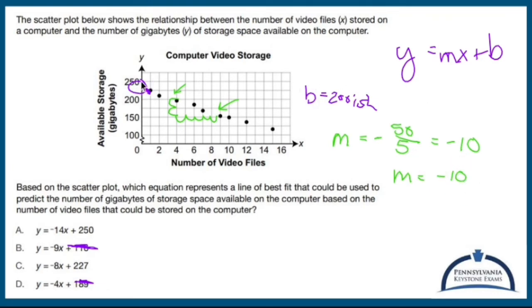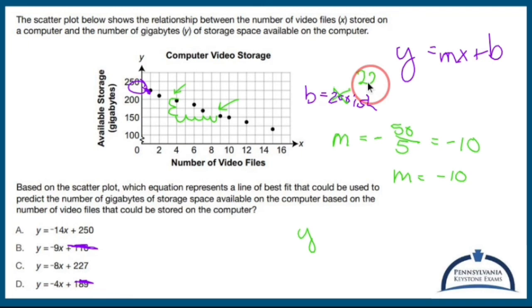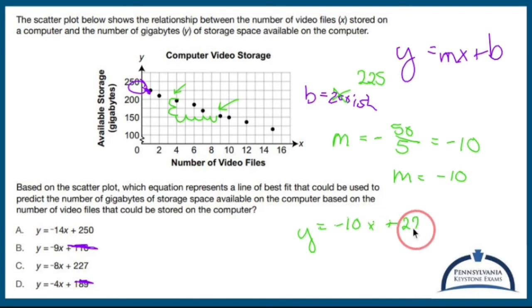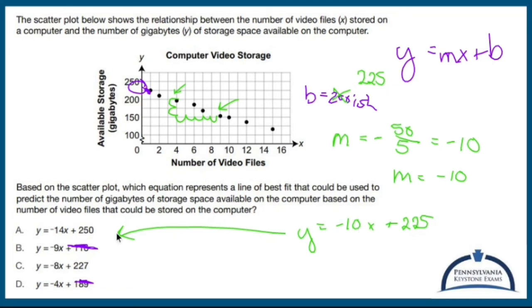My b is around 225 — somewhere between 200 and 250. So the equation I get is y equals negative 10x plus 225. That's not exactly any of the given options, but negative 10 is closer to negative 8 than negative 14, and 225 is closer to 227 than 250. So I'm going with answer C. It's not perfect, but it's much closer than A.